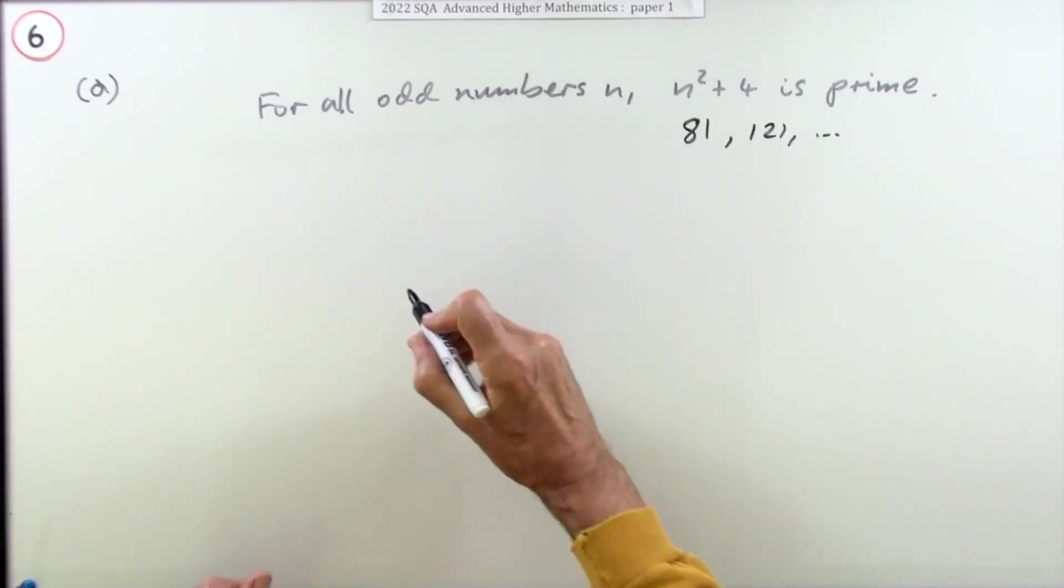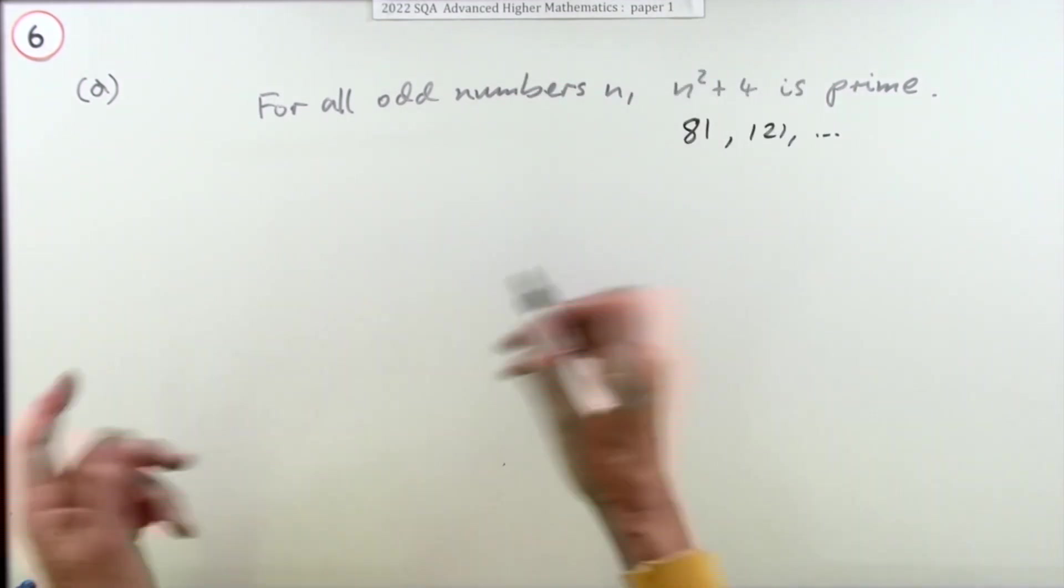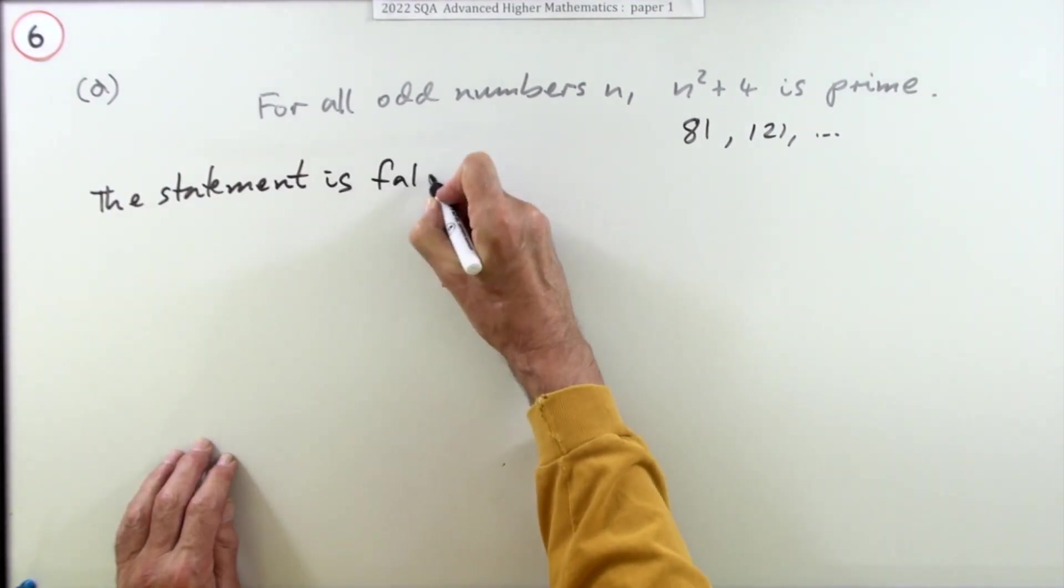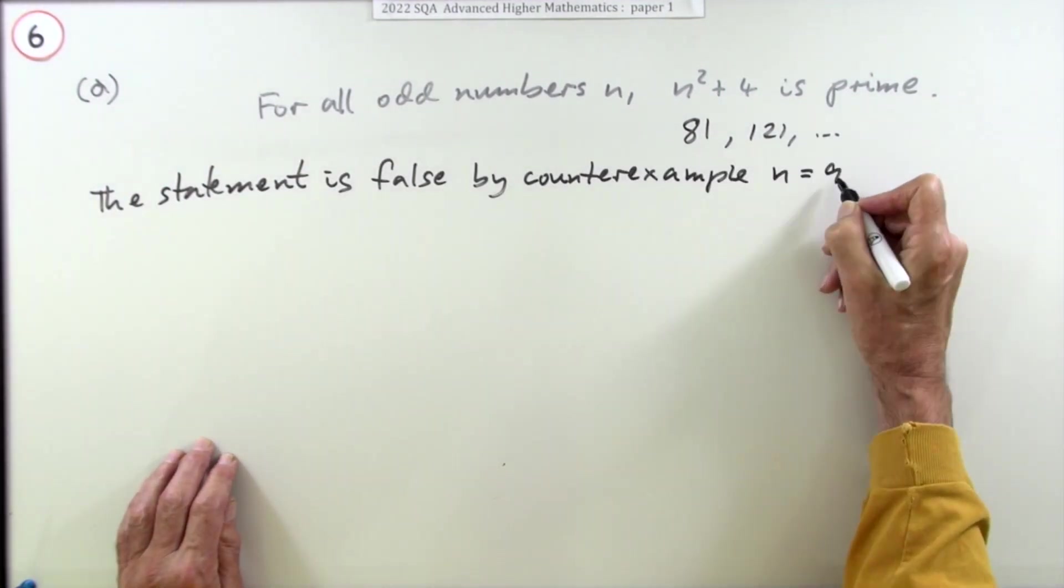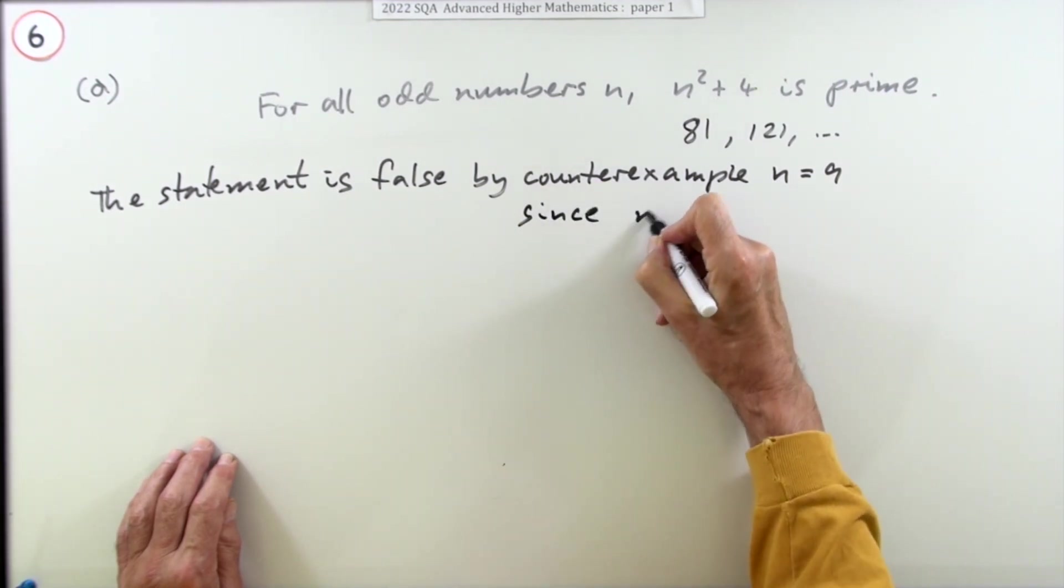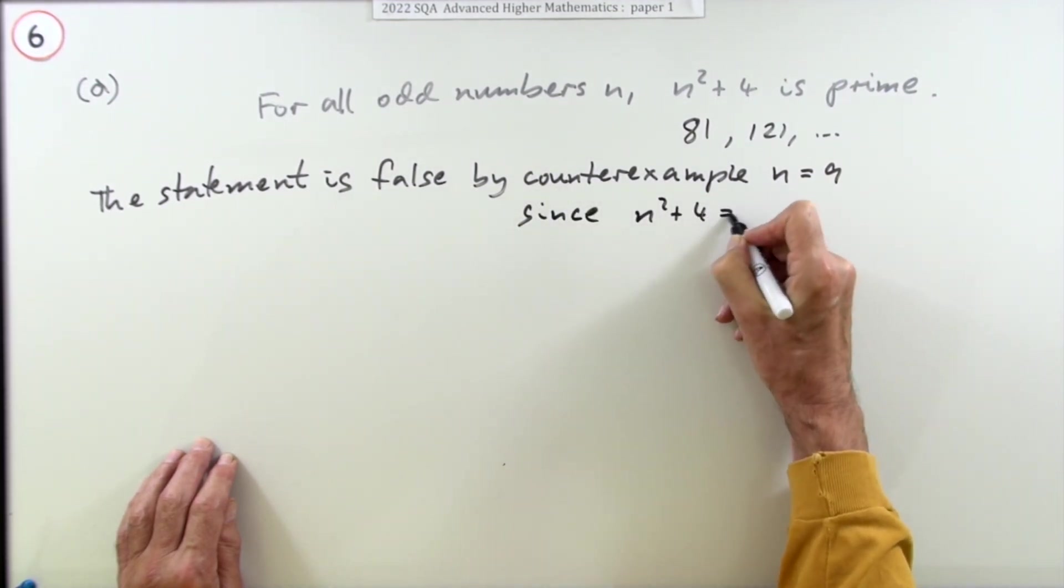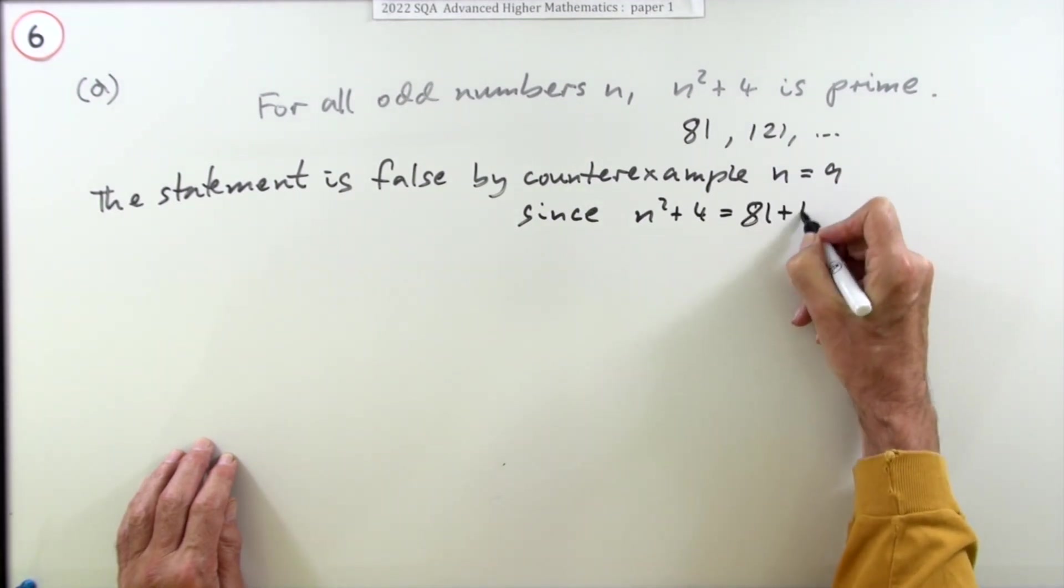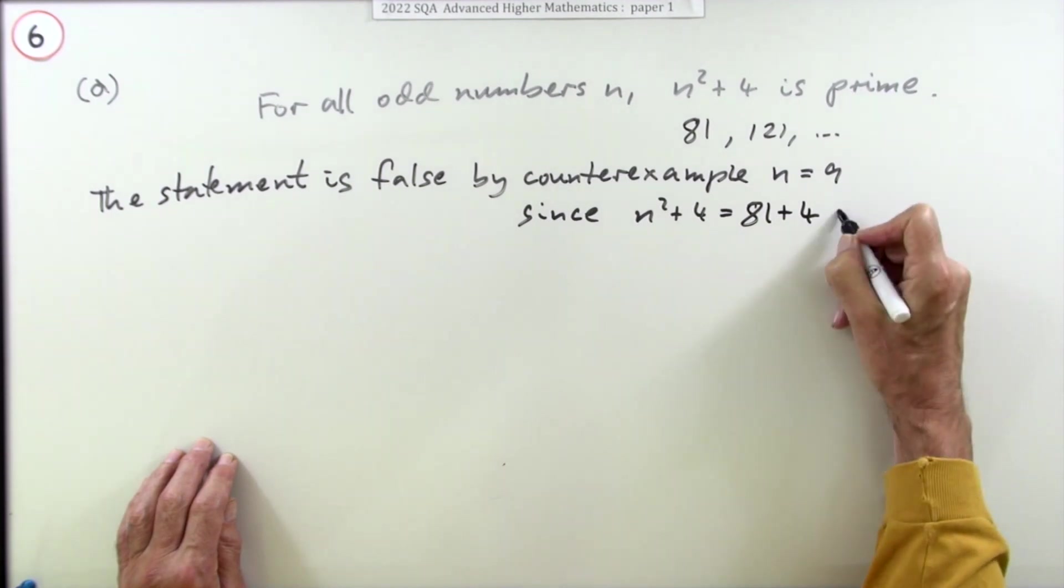Here's how you write down the answer. Maybe a bit of overkill, but better safe than sorry. The statement is false by counterexample. n equals 9. Since n squared plus four equals 81 plus four, which is 85.